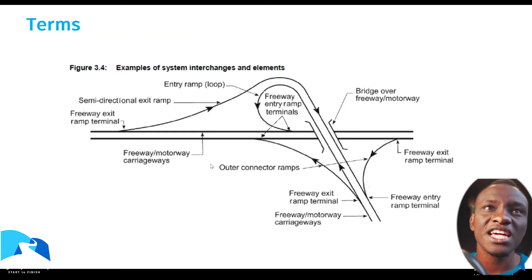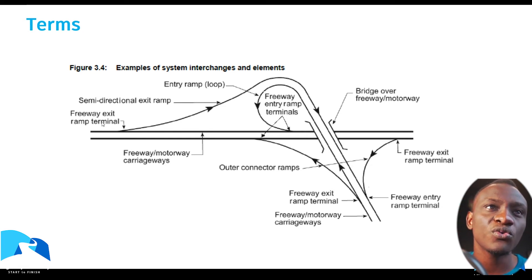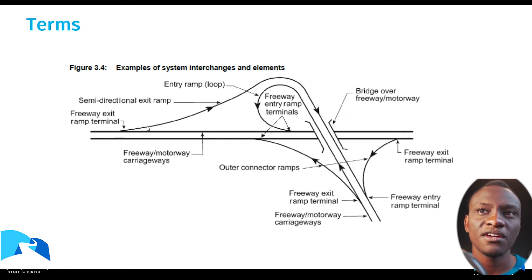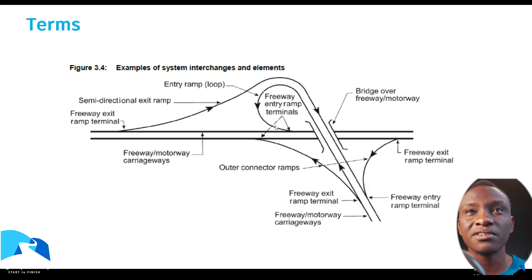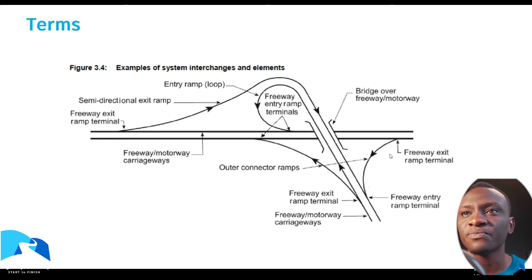So what are the different elements of the trumpet interchange? We always have something called the freeway ramp terminal — it's an exit terminal, meaning you're exiting off the highway, expressway, or motorway. After that, you proceed into something called a semi-directional ramp. Then there's a component called the loop, which is a freeway entry ramp that allows people coming in that direction to access the interchange. Then we have a bridge or structure, and after that the outer connector ramps.